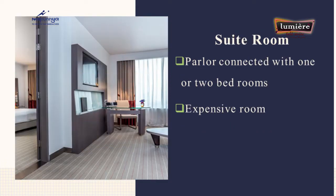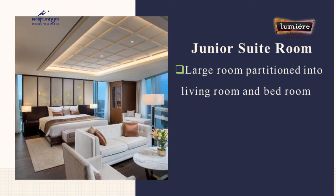The next room is suite room — one of the most expensive rooms in a hotel. A suite room has a living room and a bedroom; the bedroom may be one or more than one. We also have junior suite room, which is a large room partitioned into a living room and a bedroom. The difference is that in a suite room the living room and bedroom are actually separate rooms, whereas in a junior suite room a single large room is partitioned into the two areas.